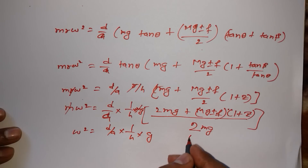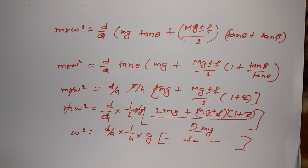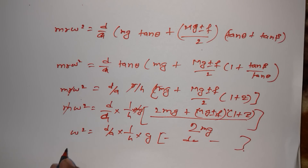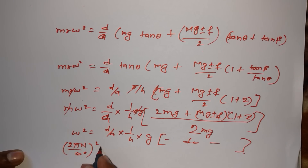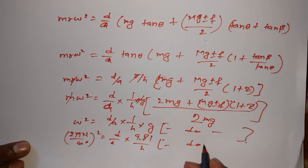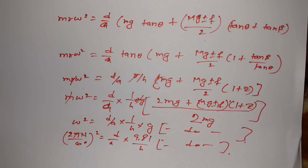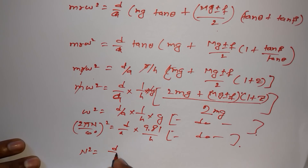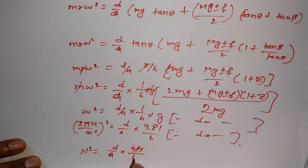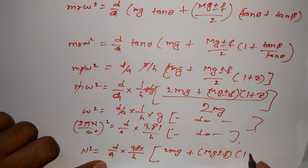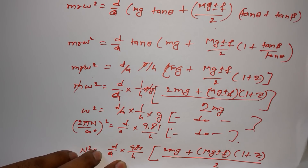After canceling r, we get: m times omega-squared equals d divided by A times 1 divided by h, times g times the bracket. Now substituting omega equals 2 pi N divided by 60, and g equals 9.81 m/s², and squaring omega: (2 pi N divided by 60) squared times d divided by A times 9.81 divided by h equals the right-hand side. Solving for N-squared: N-squared equals d divided by A times 895 divided by h, times (2mg plus mg plus or minus f times (1 plus z)) divided by (2mg).